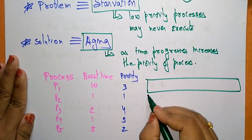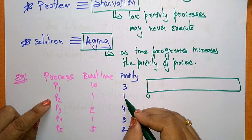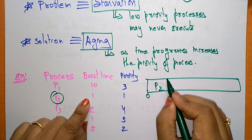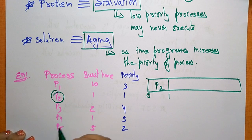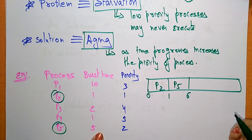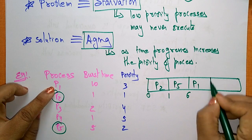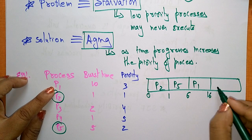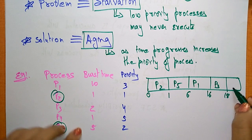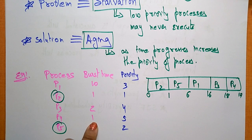Priority 1 is the highest, so P2 executes first — its burst time is 1, finishing at time 1. Next is P5 with priority 2 — burst time 5, finishing at time 6. Then P1 with priority 3 — burst time 10, finishing at time 16. Then P3 with priority 4 — burst time 2, finishing at time 18. Finally P4 with priority 5 — burst time 1, finishing at time 19.